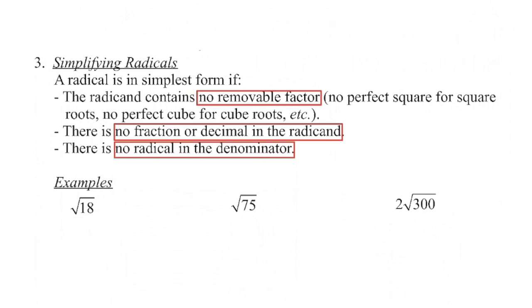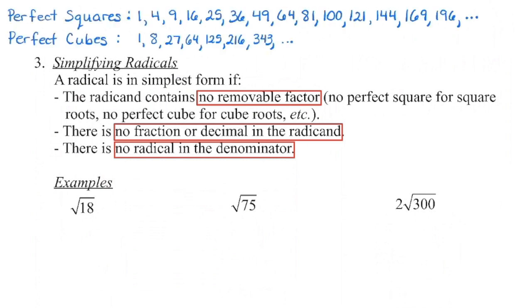So let's take a look at the first one. We have the square root of 18 and we're going to simplify this. It might be helpful to make a list of the perfect squares and the perfect cubes at the top of your page. So 1 squared is 1, 2 squared is 4, 3 squared is 9, 4 squared is 16, etc. We're looking for the largest number that will divide evenly into 18 that is a perfect square. 18 is between 16 and 25; 16 will not divide evenly, but 9 will. So I'm going to write the square root of 18 as the square root of 9 times the square root of 2.